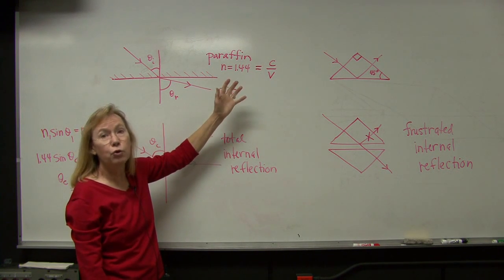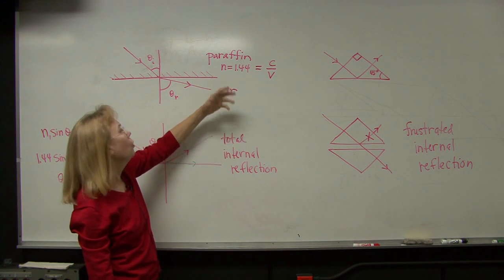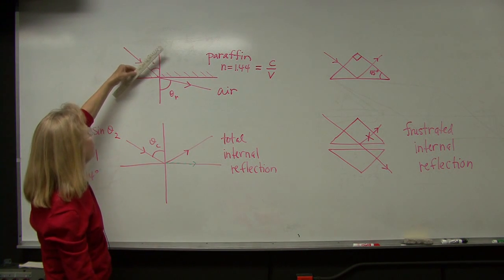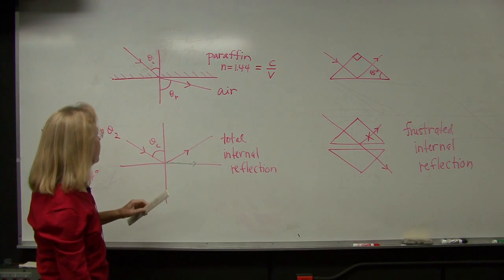So the fact that the index of refraction is 1.44 means that the speed of these electromagnetic waves in paraffin is roughly two-thirds the speed in a vacuum or in air. So this wave front is going to refract away from the normal.